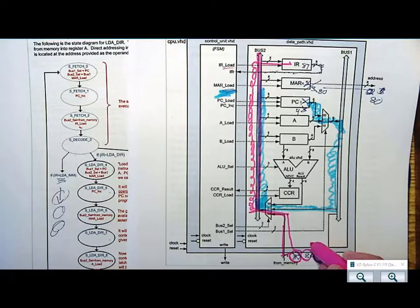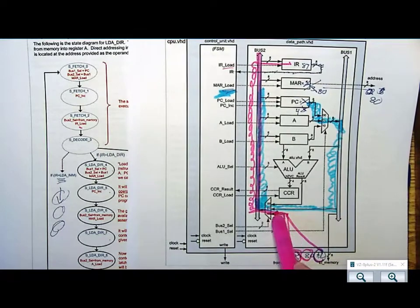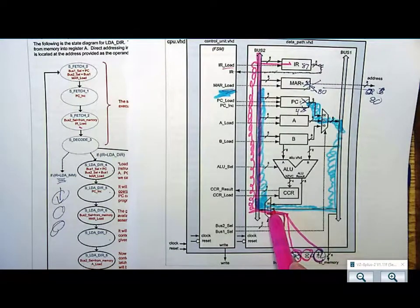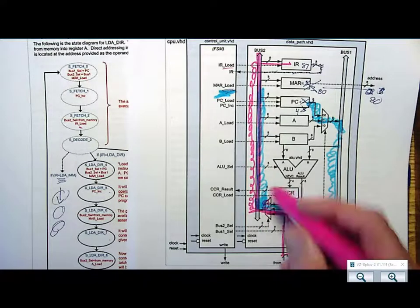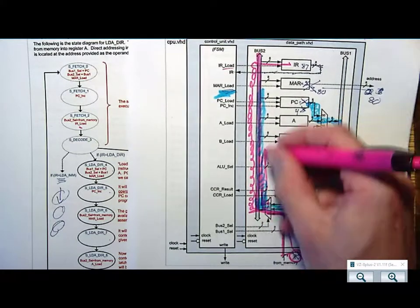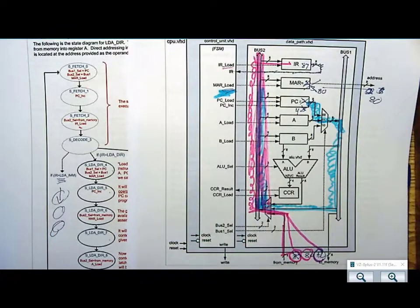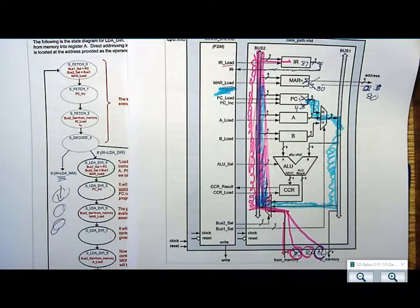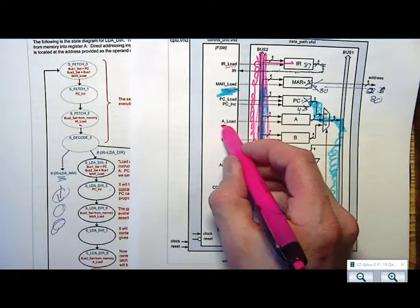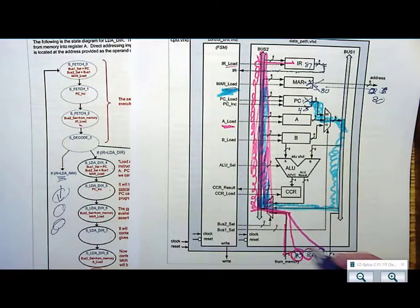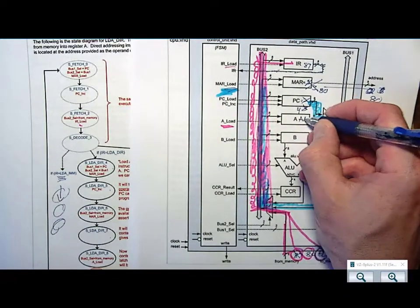I need to bring it into the data path by doing bus2select equals from memory. I then need to say, okay, I got AA on bus 2. Where does it go? It goes into A. So I finally do an A load, and boom, A gets AA.